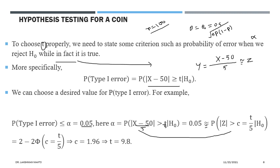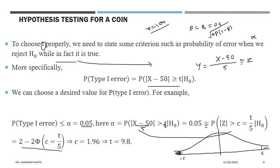From the normal table, the probability can be reduced. The PDF of a standard normal random variable: here zero is the mean. We are looking at the probability that the absolute value of Z is greater than c, which corresponds to the right tail beyond c and the left tail beyond negative c. By symmetry, this probability is twice the tail probability, and we know this total value equals 0.05.